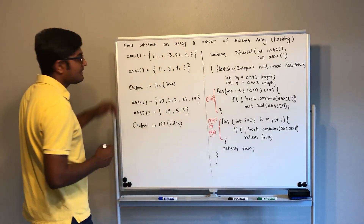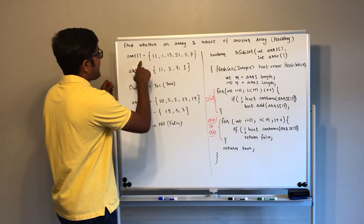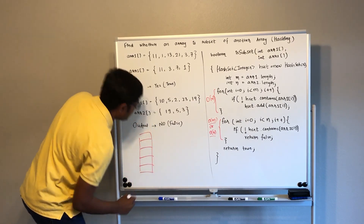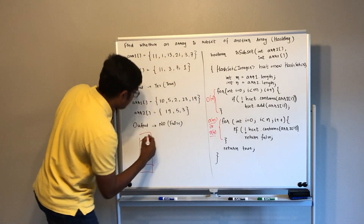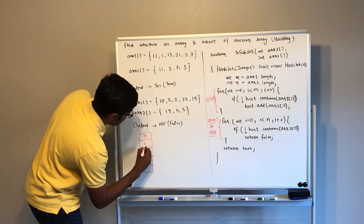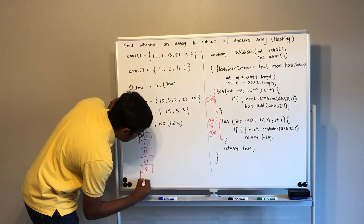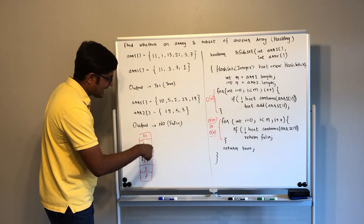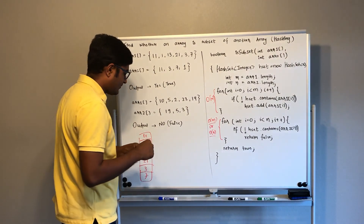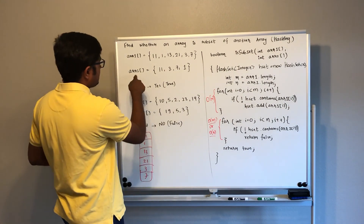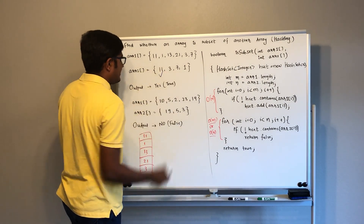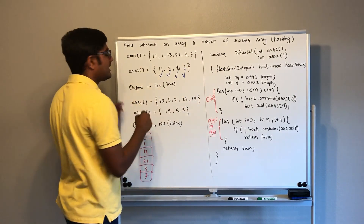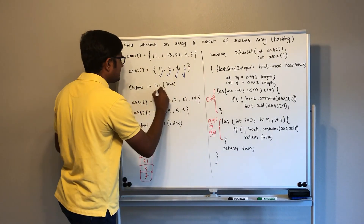Let's do a dry run for the given examples. In this case array 1 has elements 11, 1, 13, 21, 3, and 7. So we create a hash set containing 11, 1, 13, 21, 3, and 7 — all these elements are saved in the hash set with hashing, so each can be searched in O(1). Now going through array 2, we check: 11 exists — yes. 3 exists — yes. 7 exists — yes. And 1 is also there. So we can safely return true, meaning the output is yes.